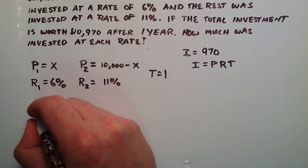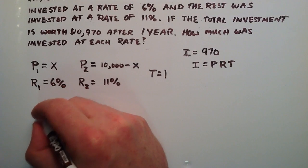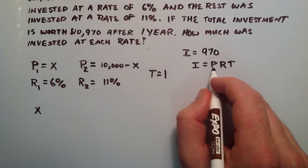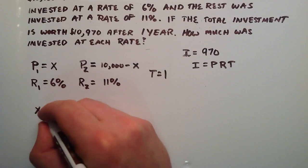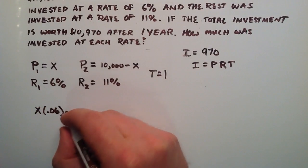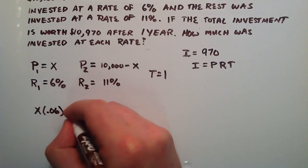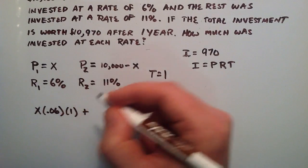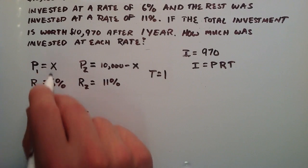So basically what we're going to do is we're going to look at two different terms here. We're going to look at P₁ that we are going to invest at the 6% rate. We're going to multiply that by R₁, which is .06. And we're going to multiply that by T₁, the time invested, and that's just going to simply be one. And this is basically going to give us the interest that we made on that first chunk of money, the amount invested at 6%.